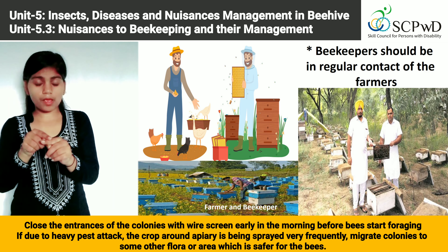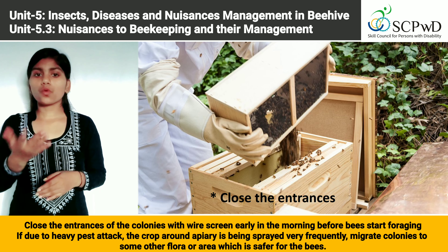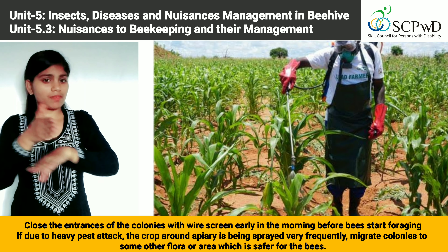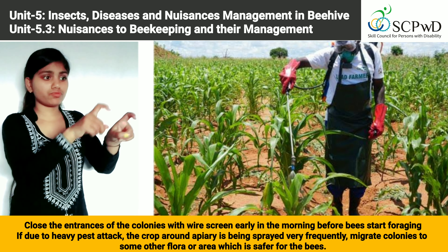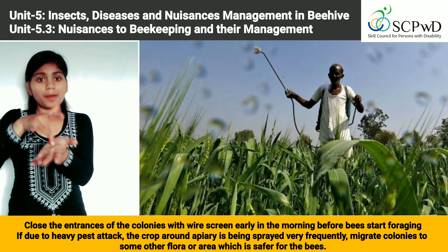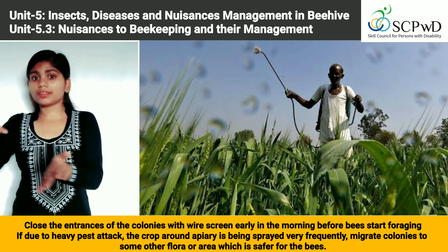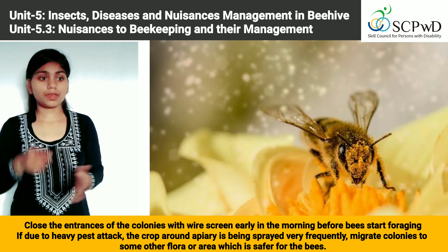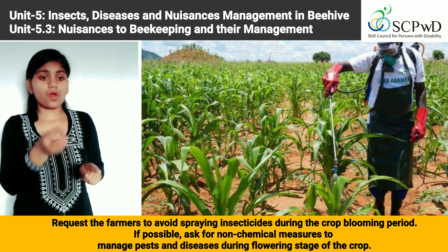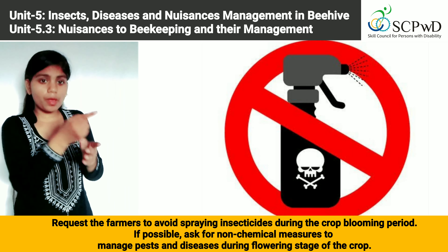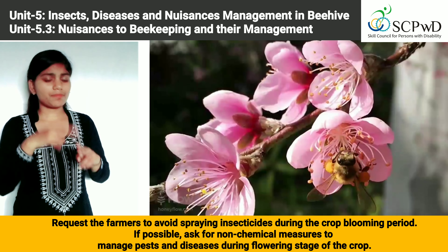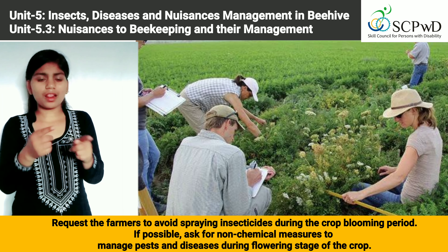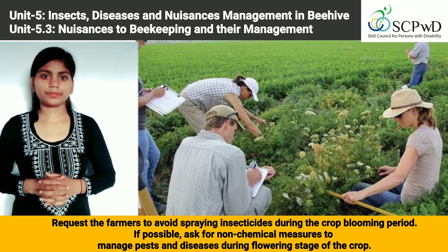Close the entrances of the colonies with wire screen early in the morning before bees start foraging. If due to heavy pest attack the crop around the apiary is being sprayed very frequently, migrate colonies to some other flora or area which is safer for the bees. Request farmers to avoid spraying insecticides during the crop blooming period, and if possible, ask for non-chemical measures to manage pests and diseases during the flowering stage of the crop.